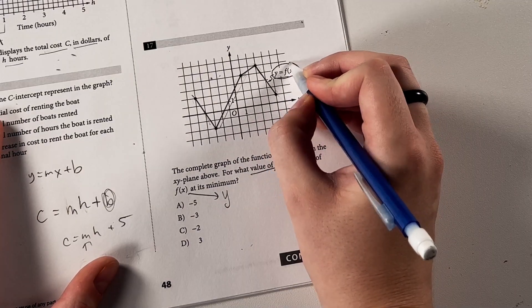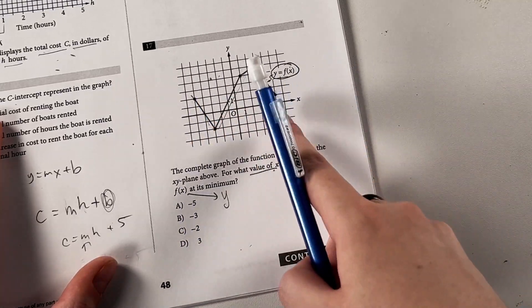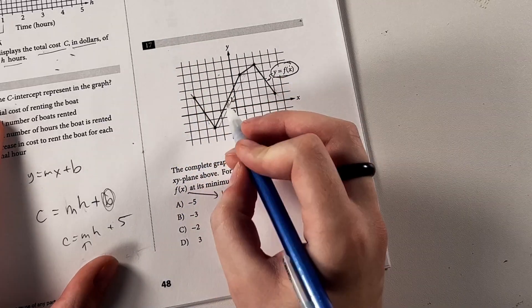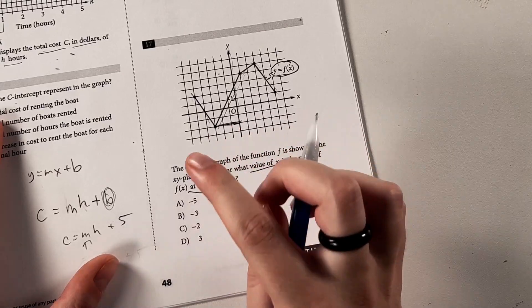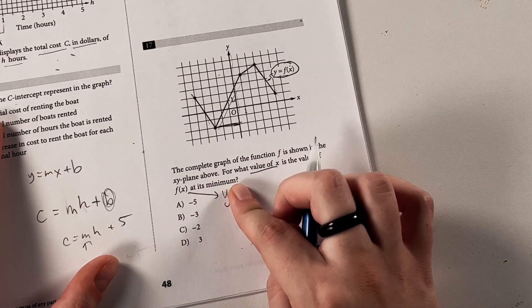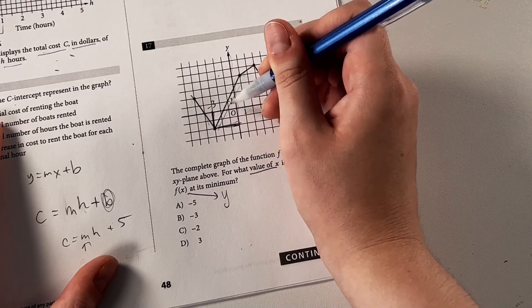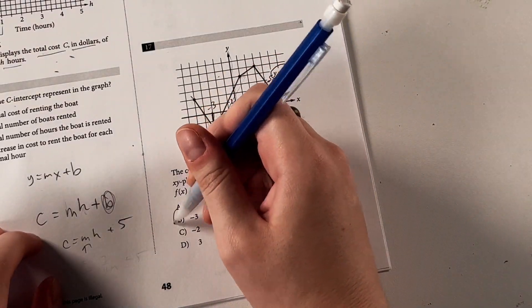We're just looking for what value of x is this function here, this weird squiggle thing, at its minimum. And we see that y equals f of x. So we can kind of just assume it's where y is at its minimum. So we're looking for the value of x when the y value of this function is at its minimum. So in this case, the minimum y is going to be right here at negative 2. But be careful, don't pick that one yet, because we're looking for the x value, which, if we work backwards, we see that x is negative 3 when y is equal to negative 2. So our value here would be equal to negative 3.